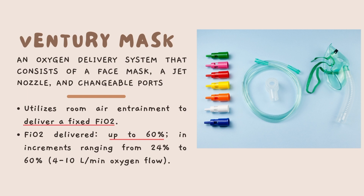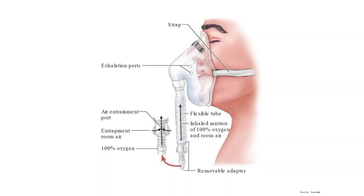Next we have the Venturi mask — an oxygen delivery system consisting of a face mask, a jet nozzle, and changeable ports. This system uses room air entrainment to deliver a fixed fraction of inspired oxygen. The FiO2 that can be delivered goes up to 60%, in increments ranging from 24% all the way up to 60%. The oxygen flow rate goes from 4 up to 10 liters per minute. It looks similar to the simple face mask but has air entrainment ports at the front.